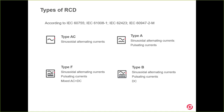The symbology is very intuitive because we can see what kind of protection each type of RCD can offer. Let's start with the most basic one and go to the highest. The most basic is type AC, which can only protect against sinusoidal alternating current. Next is type A, which can protect sinusoidal alternating current and pulsating currents. Then type F, which can protect sinusoidal alternating currents, pulsating currents, and mixed AC and DC. As you can see, each type adds the features of the previous ones.